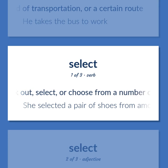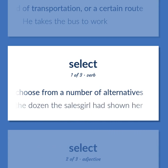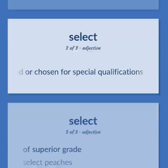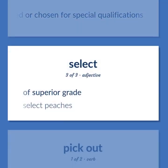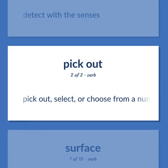Pick out, select, or choose from a number of alternatives. She selected a pair of shoes from among the dozen the salesgirl had shown her. Selected or chosen for special qualifications. Pick out, select, or choose from a number of alternatives.